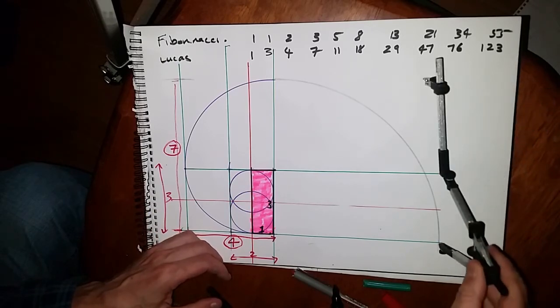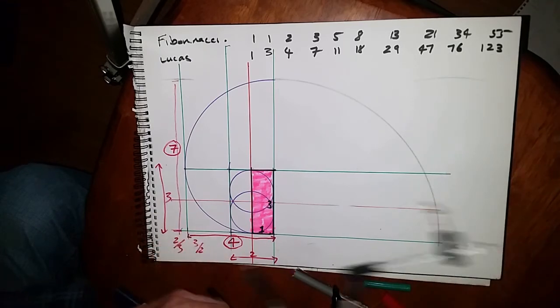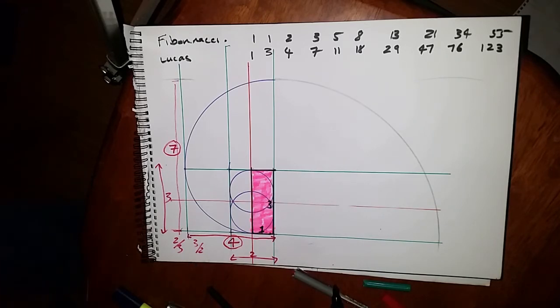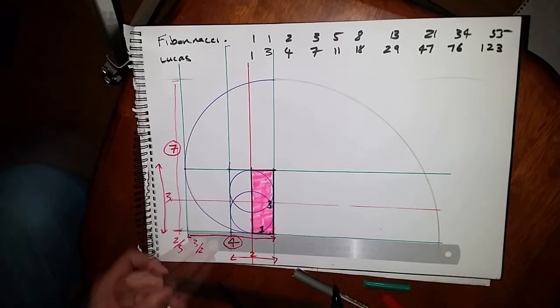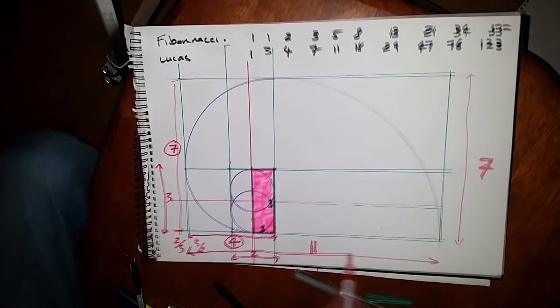But this is also important because it describes the idealized measures of the Great Pyramid, which is 7 to 11. So we have a rectangle that's 7 high and 11 wide. All you're going to do is bisect it across the long edge, draw your points together, and you have the Great Pyramid.